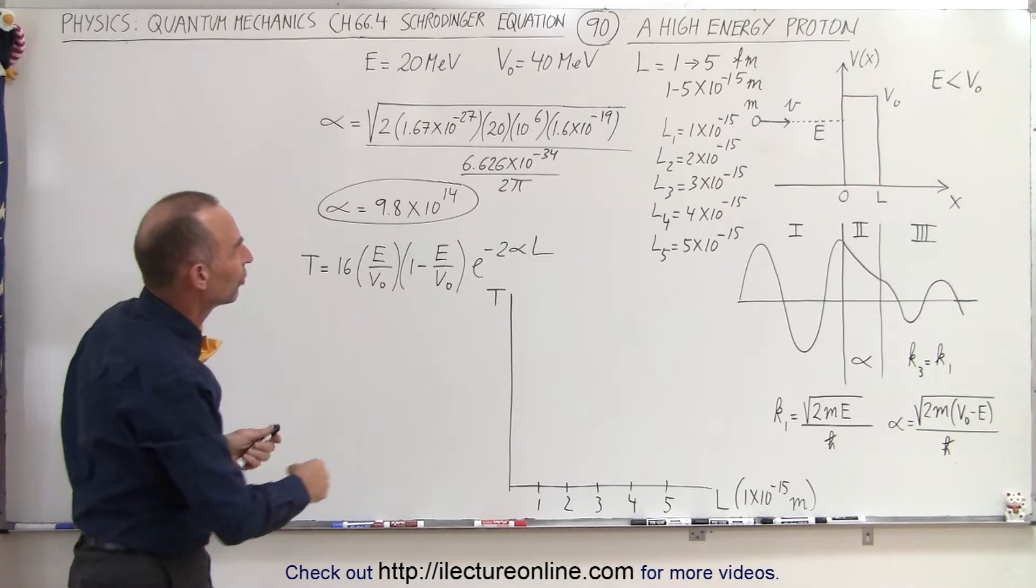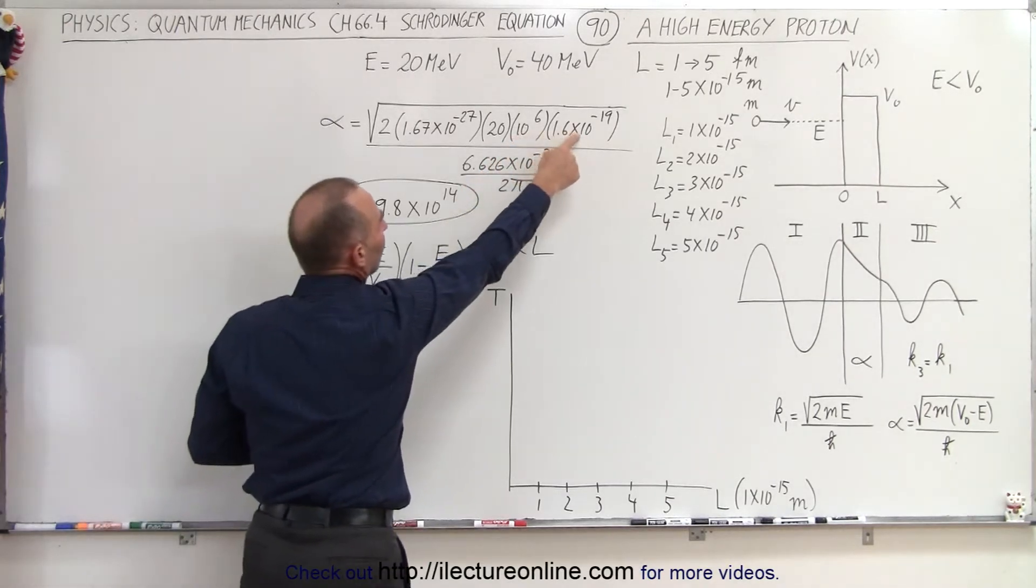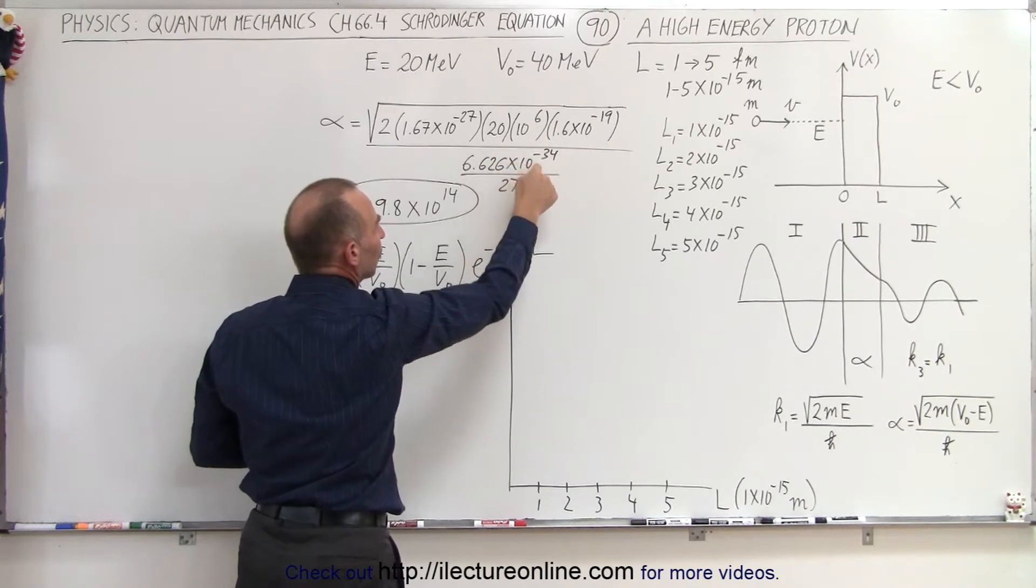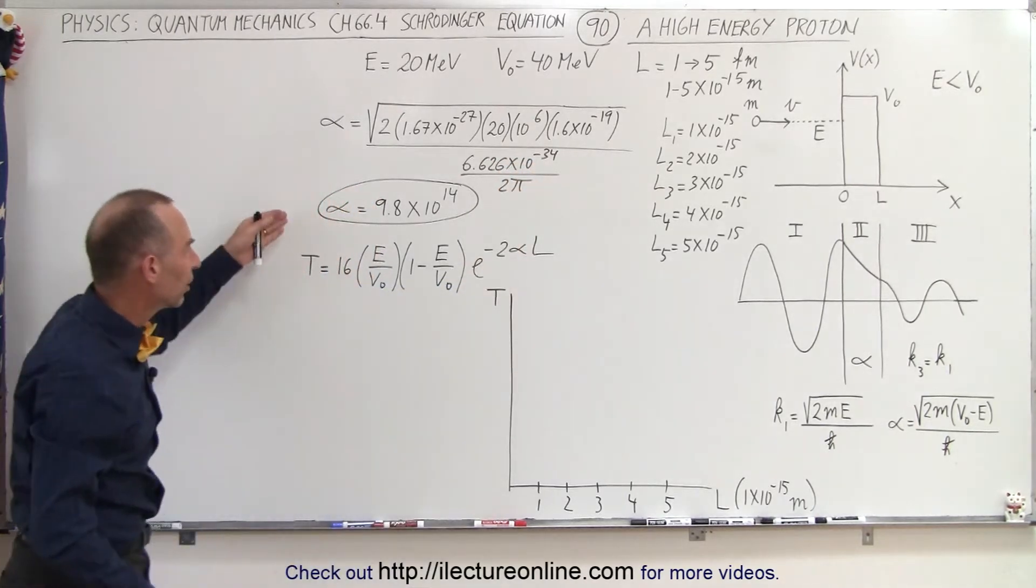It's 20 million electron volts, so 10 to the 6th is million. Of course, we have the conversion to joules. We have h-bar, that means h divided by 2 pi. So there's all alpha.